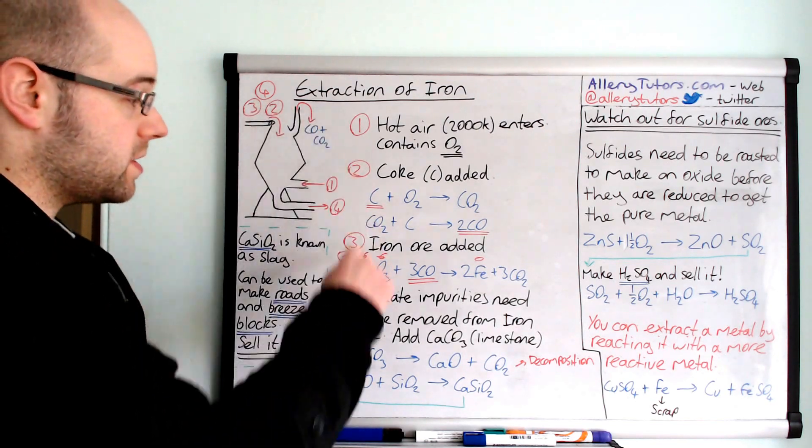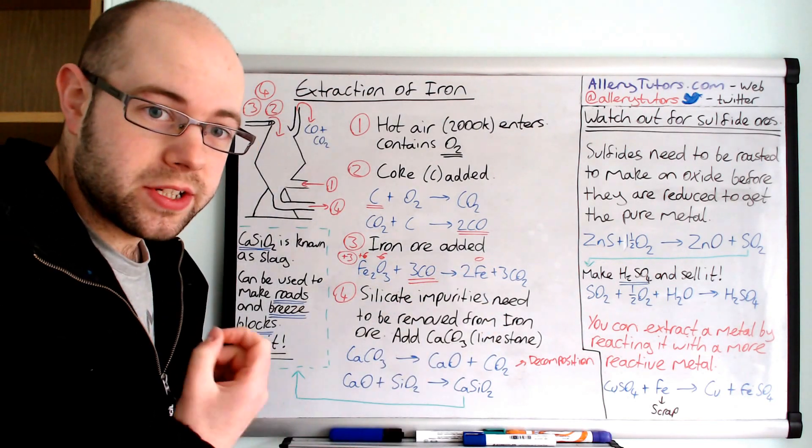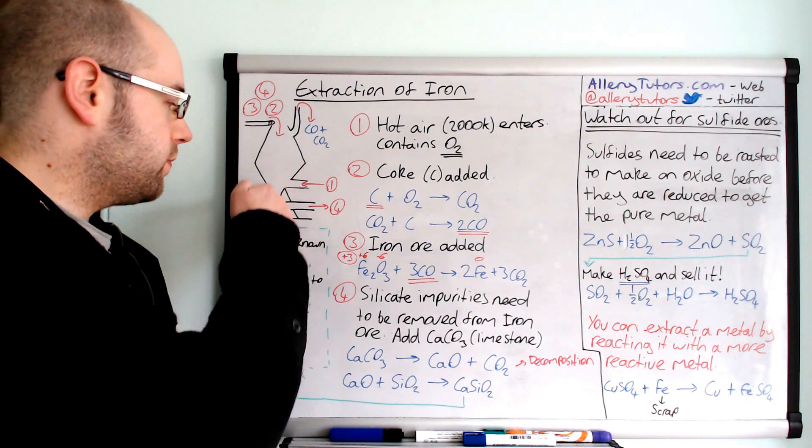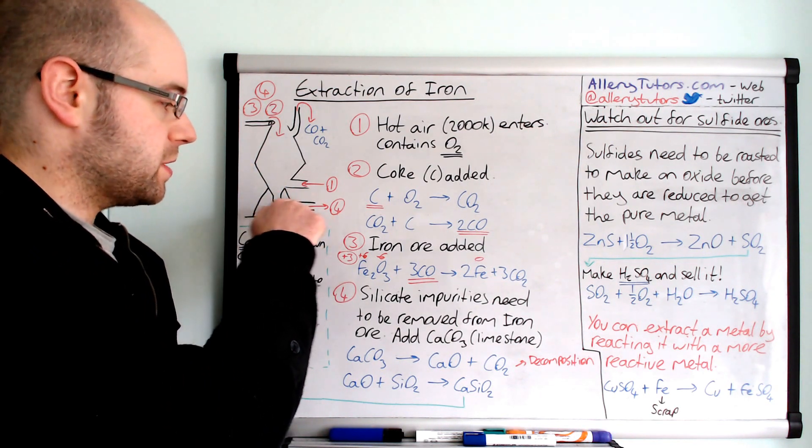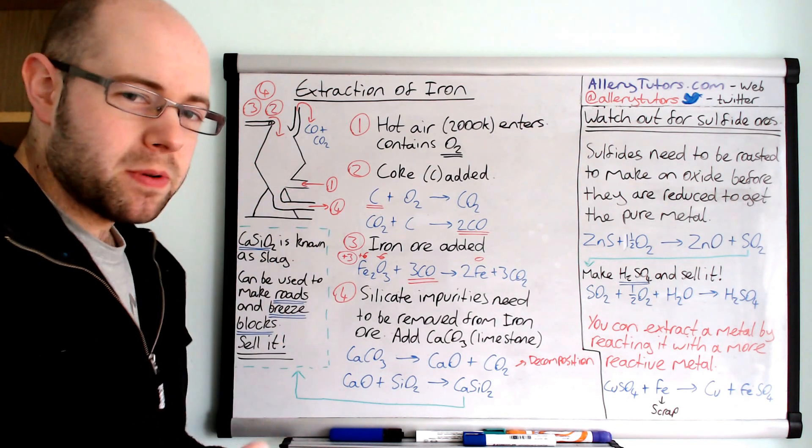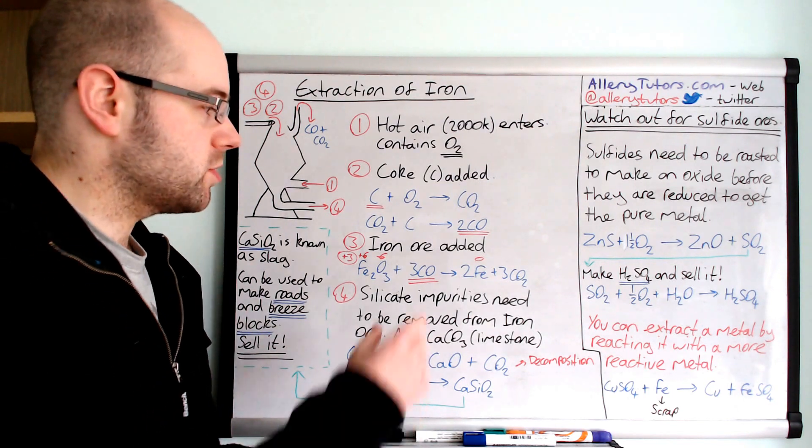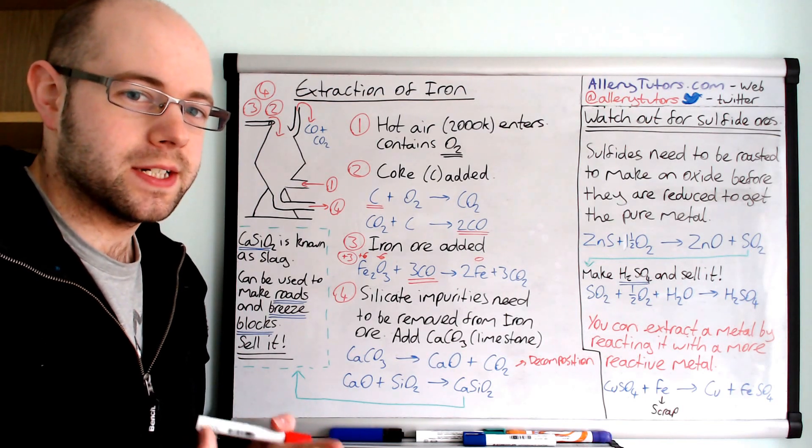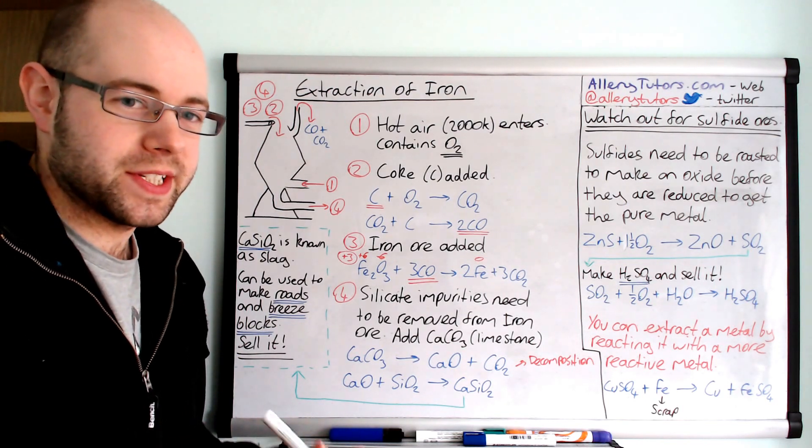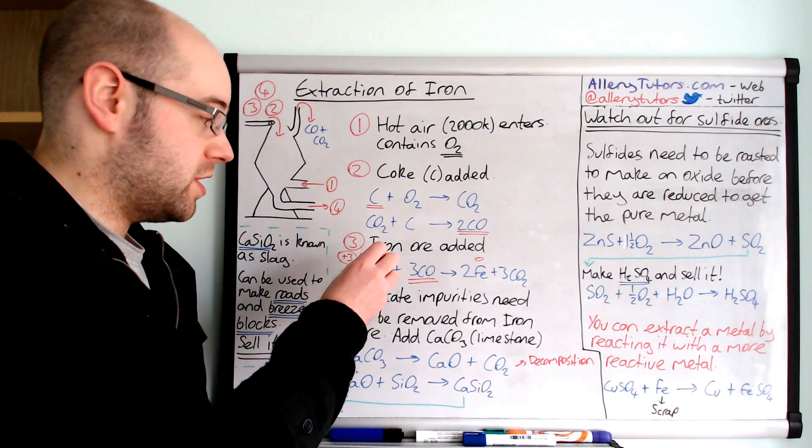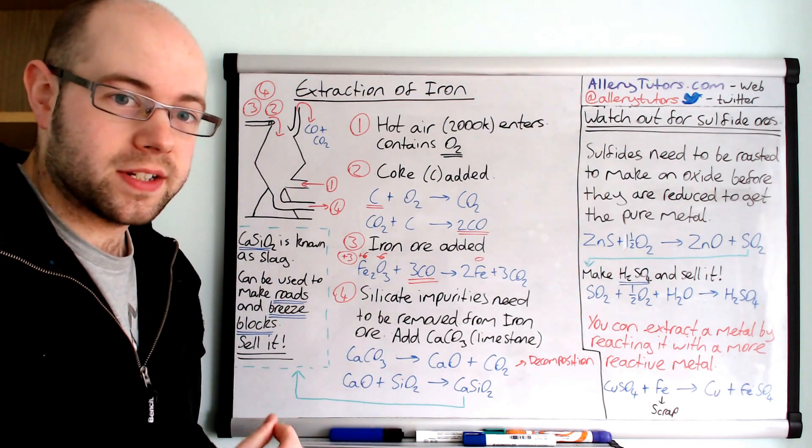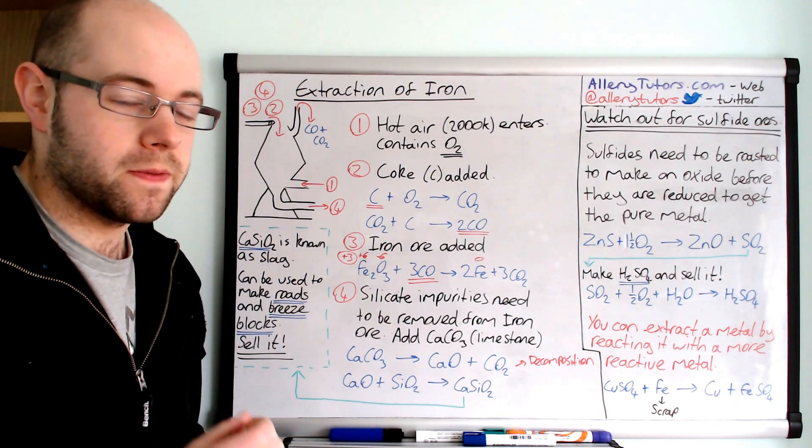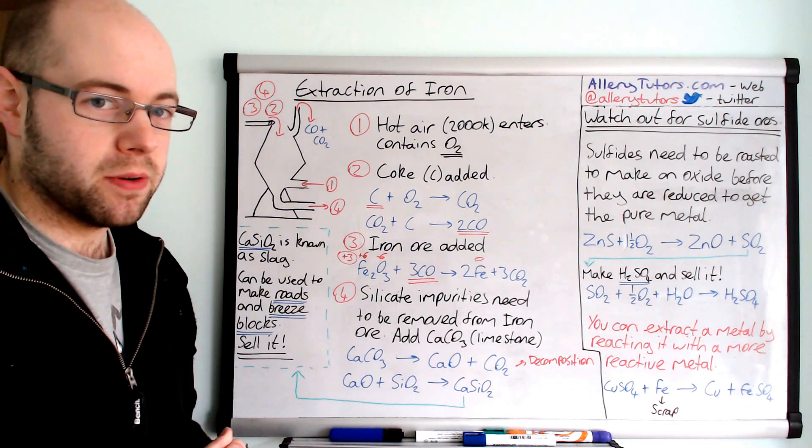Okay so finally we've got our iron and this is in the liquid form and this will fall to the bottom and come off at this position here. But the problem is we've also got not only just iron oxide, we've also got impurities in there and this is in the form of silicon dioxide which is effectively sand and this is actually attached to the iron oxide. This needs to be removed first before we get any pure iron.